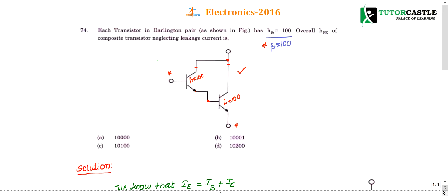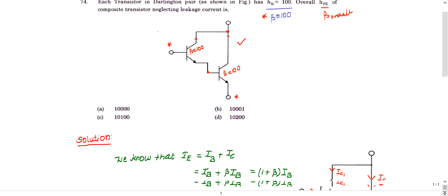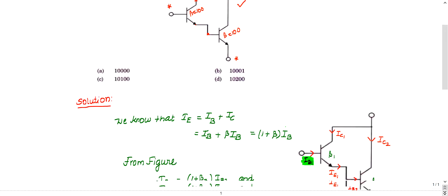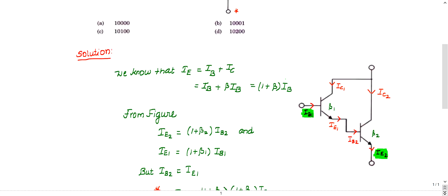The question asks: what is the overall beta (HFE) — the overall beta of the composite transistor — neglecting the leakage currents? It's a very simple question, so let me explain.